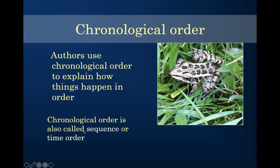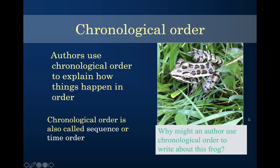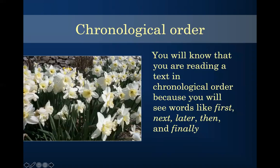Chronological order can also be called sequence or time order. You'll hear either of those words — they're interchangeable, meaning they mean the same thing. Think about why an author might use chronological order to write about a frog. Hopefully you came up with the life cycle of a frog — that's definitely something put in chronological order. You'll know you're reading a chronological text because you'll see words like first, next, later, then, finally — these tell you the order in which events occur.